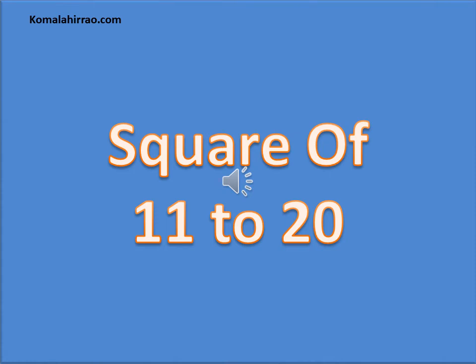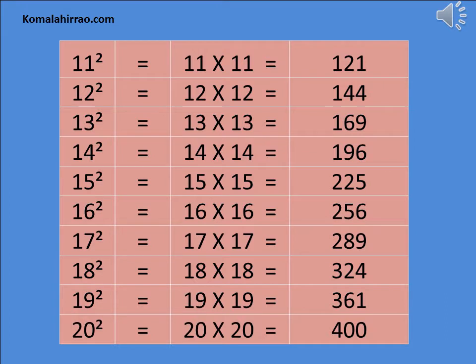Square of 11 to 20. 11 square is equal to 11 multiply by 11 is equal to 121. 12 square is equal to 12 multiply by 12 is equal to 144. 13 square is equal to 13 multiply by 13 is equal to 169.